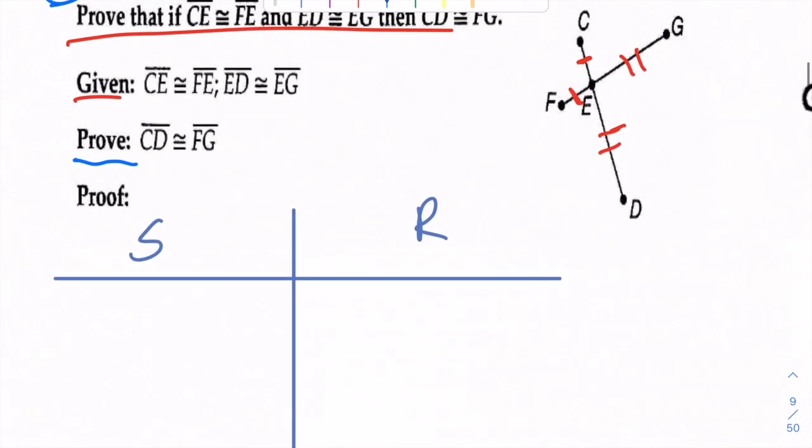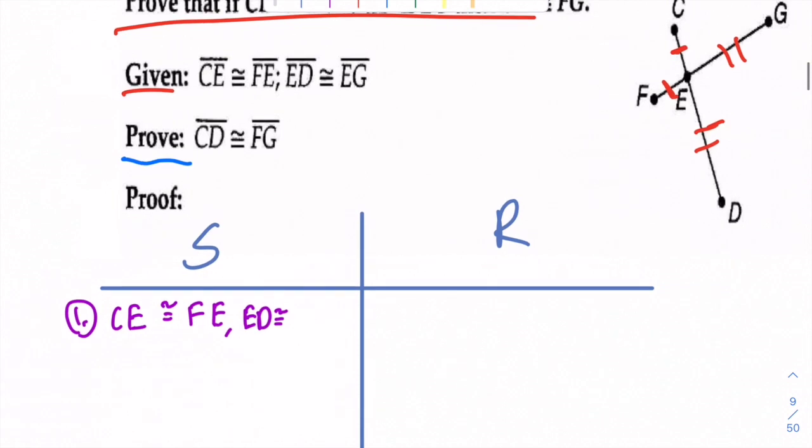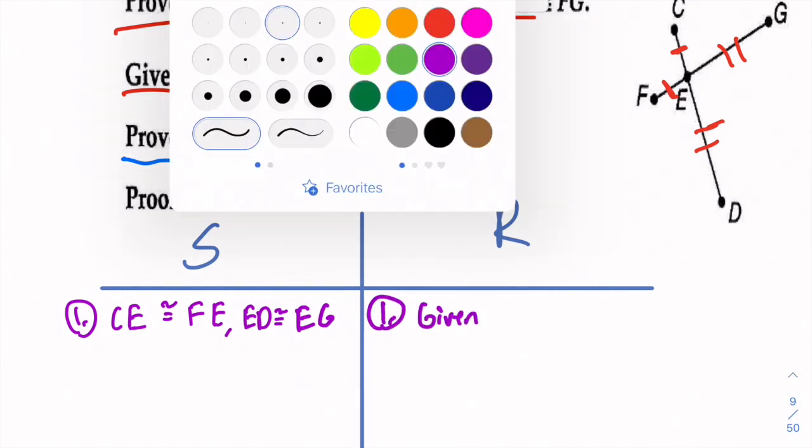So let's start. Just like any proof, we always start with our three points, which is write CE is congruent to FE, and ED is congruent to EG. That's given. Three points right there.